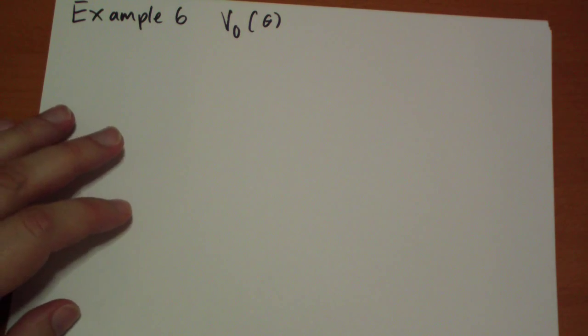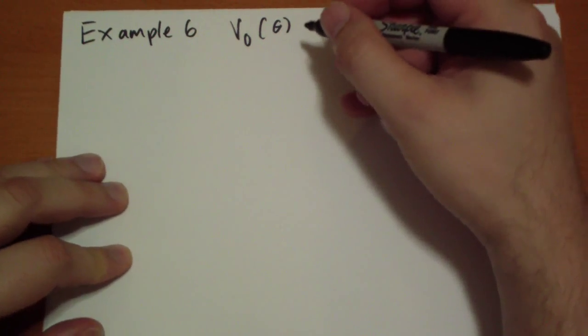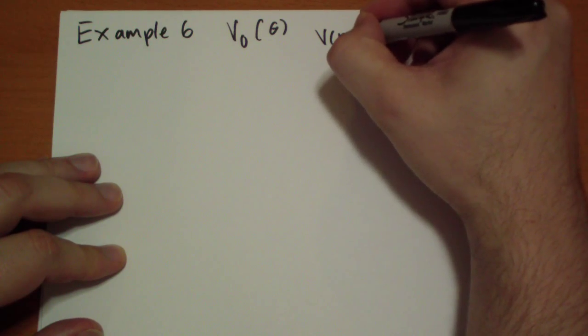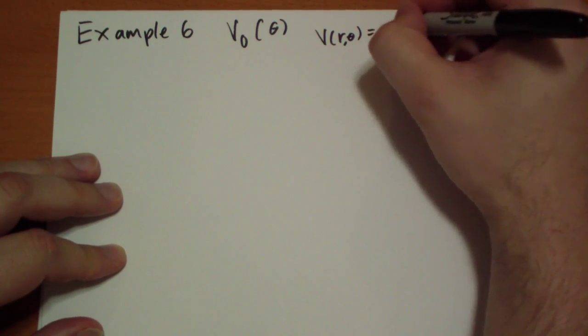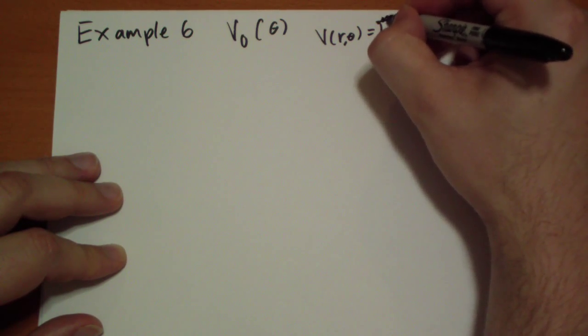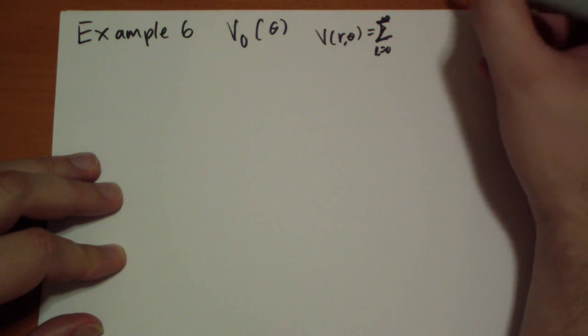So we're going to just plug in the solution that we've already calculated. It has azimuthal symmetry so we can use the solution v of r theta is equal to the sum from l equals 0 to infinity.